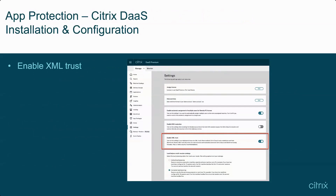For Citrix DAS configuration for App Protection, App Protection requires XML trust to be enabled. To enable XML trust from Citrix Studio, first go to the Settings node, then select to toggle Enable XML Trust if it's not already enabled.